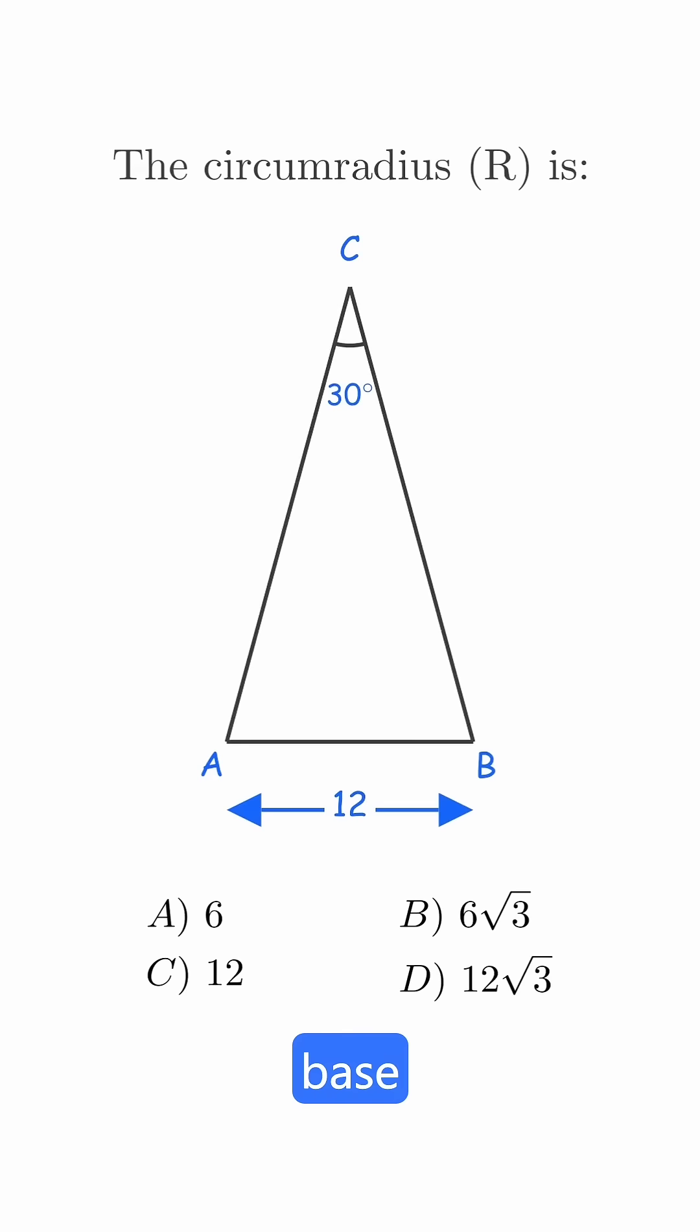You're given a triangle with base 12 and an opposite angle of 30 degrees, and you're asked to find its circumradius.